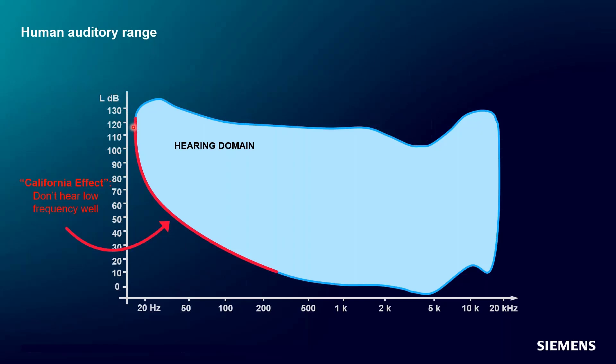The other region is the southernmost portion — the Texas effect. This area dips down, meaning I can hear a lower amplitude noise in this frequency range than anywhere else. We are really sensitive to sounds between roughly 1,000 Hz and 6,000 Hz; our ear is better there than anywhere else in the 20 Hz to 20 kHz range we can hear. The Texas effect will play a part in these tonal metrics.